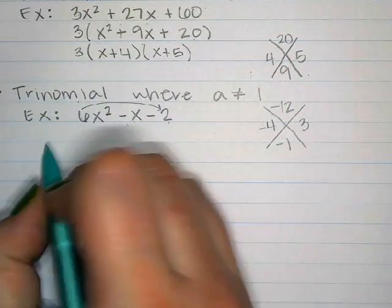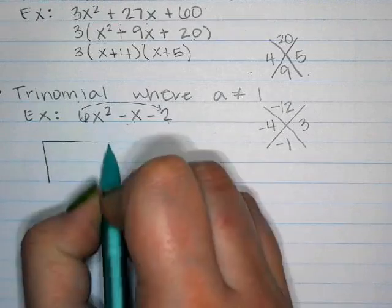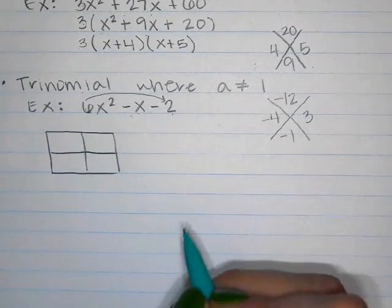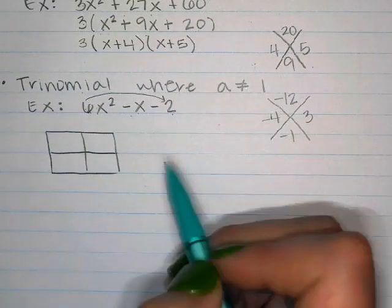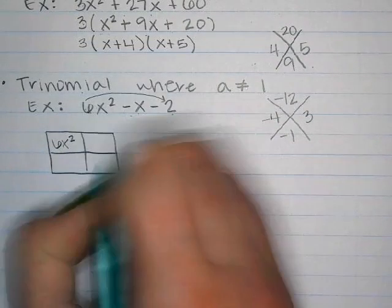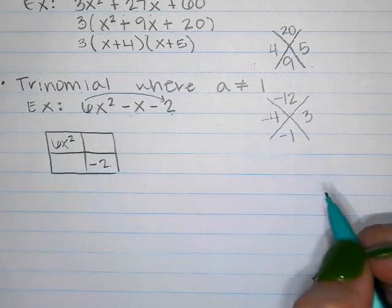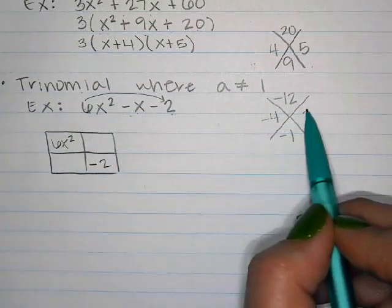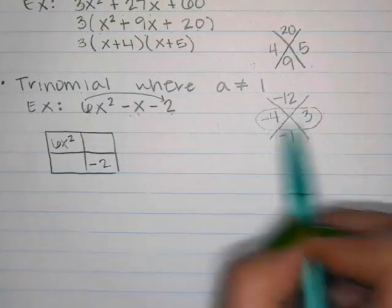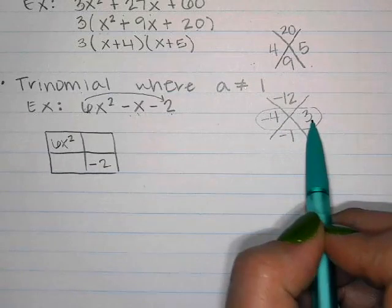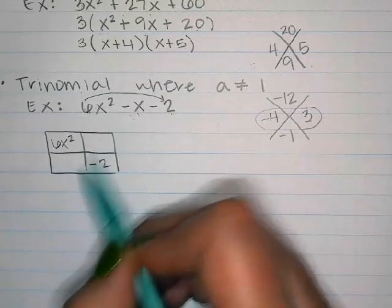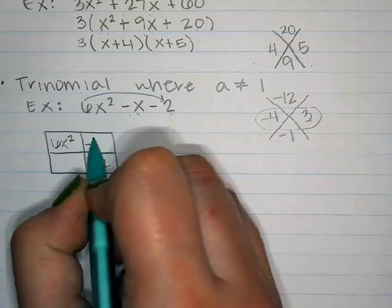Looking at the table, the pair that adds to negative 1 is negative 4 and 3. For the box method, we put the first term and last term in opposite corners: 6x squared and negative 2. Then the numbers we found make up the middle term: negative 4x and 3x, which add to negative 1x. It doesn't matter which squares you put those in.